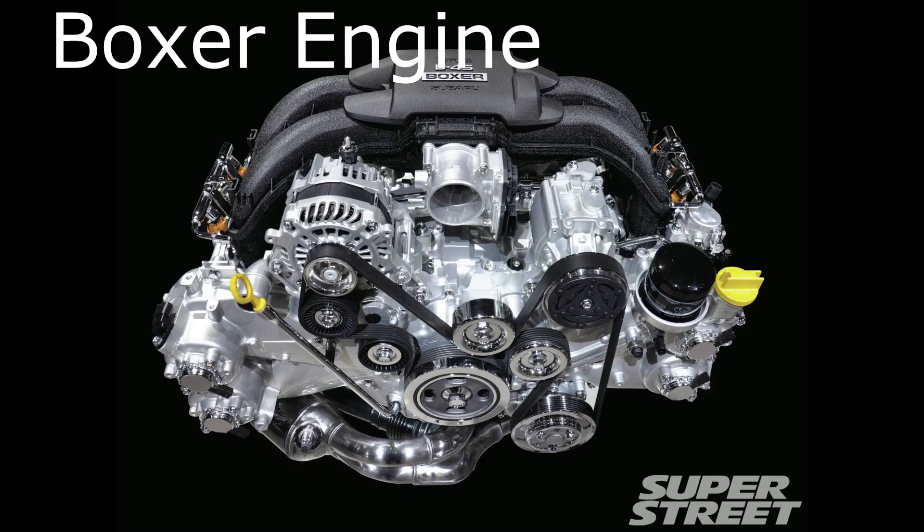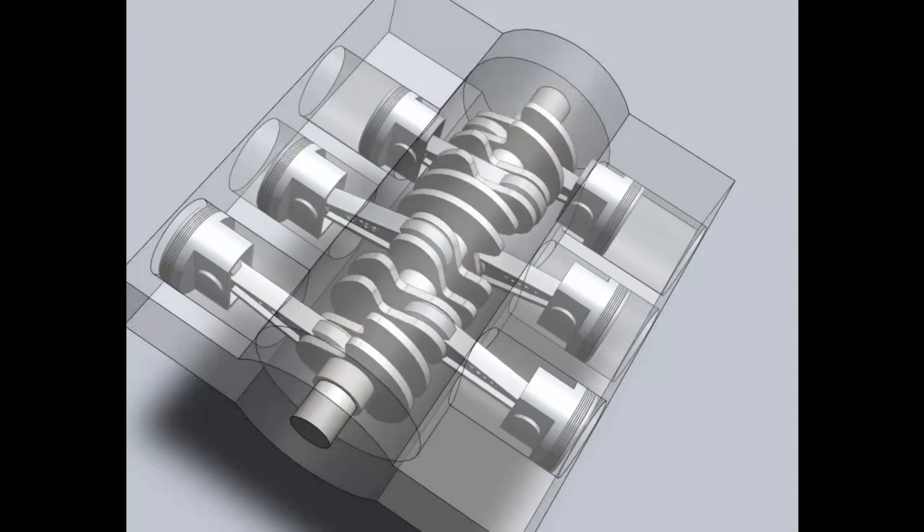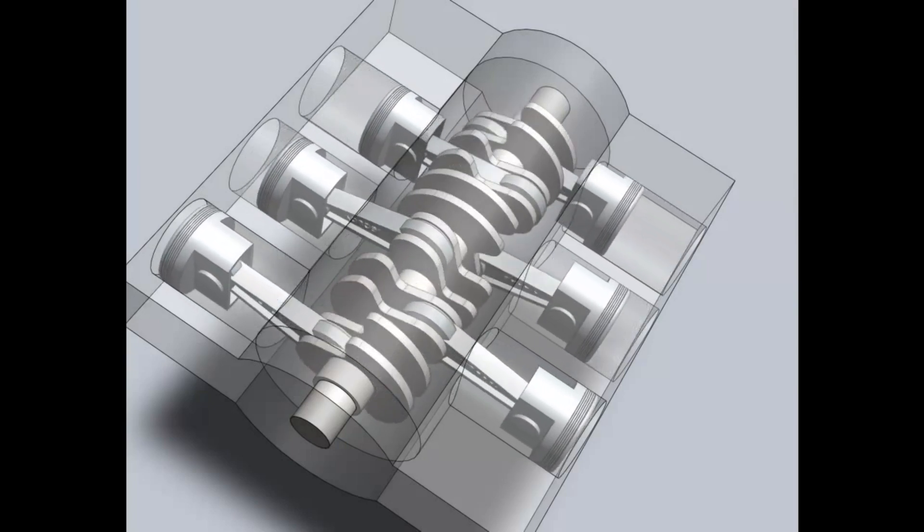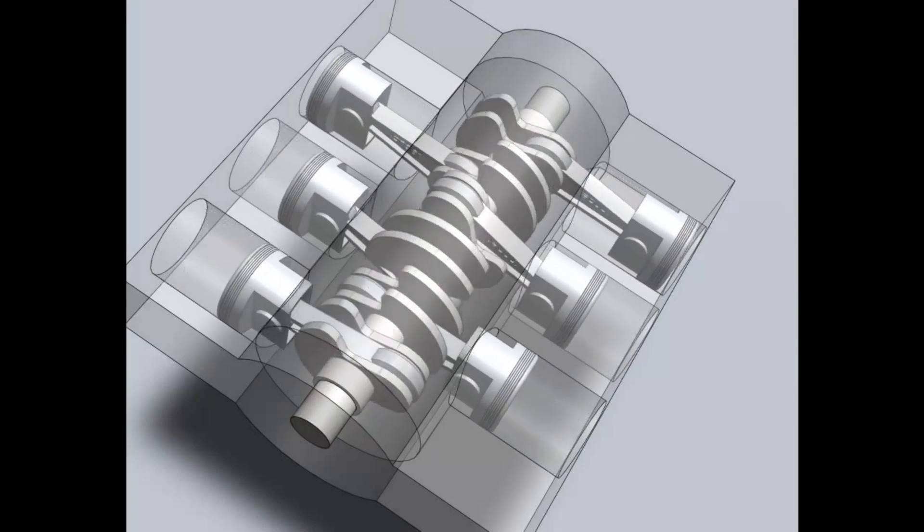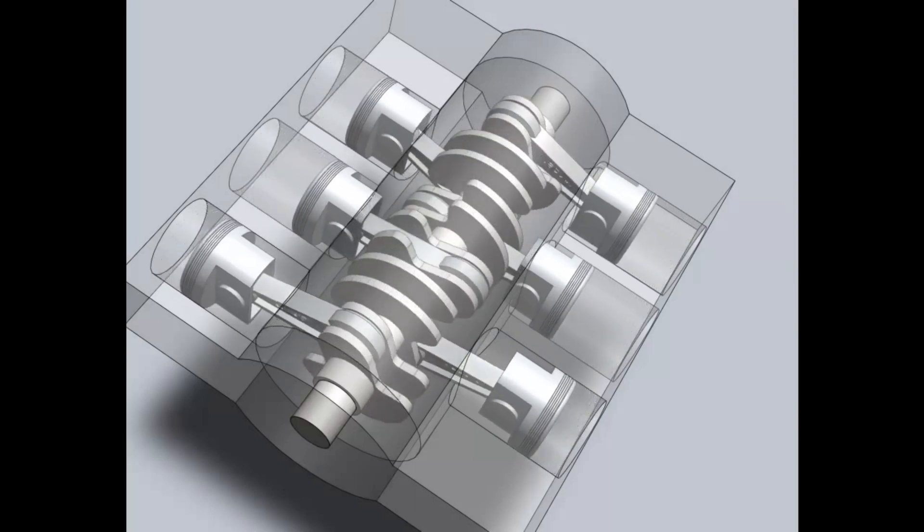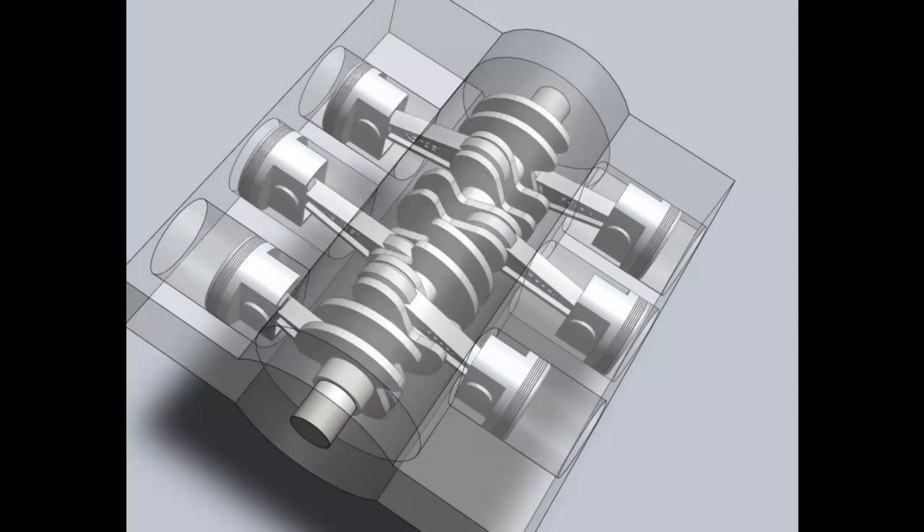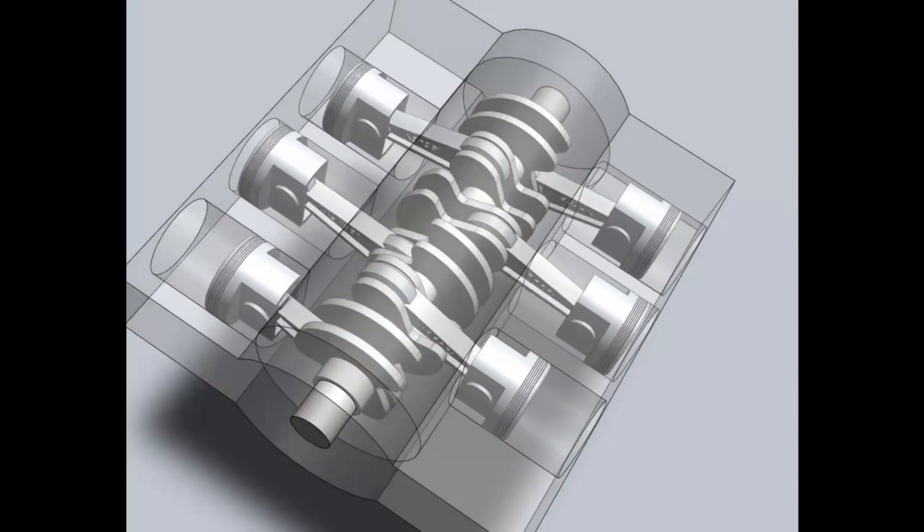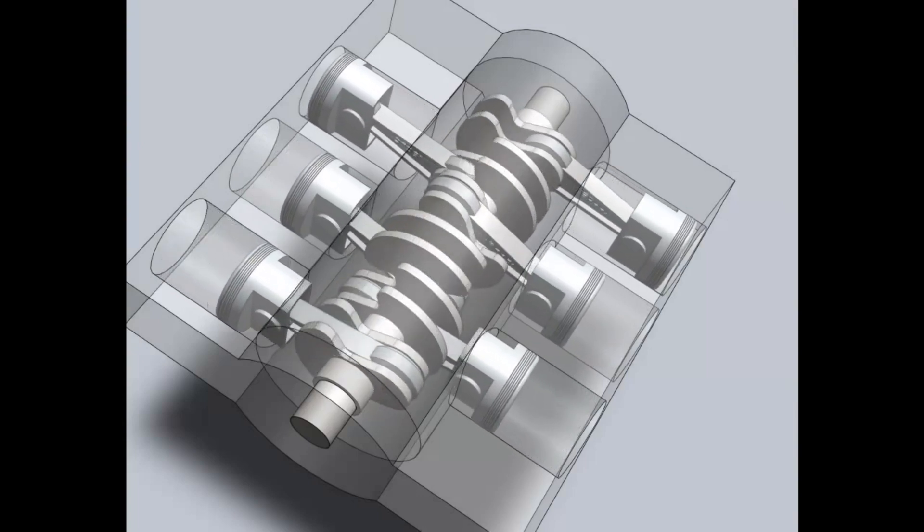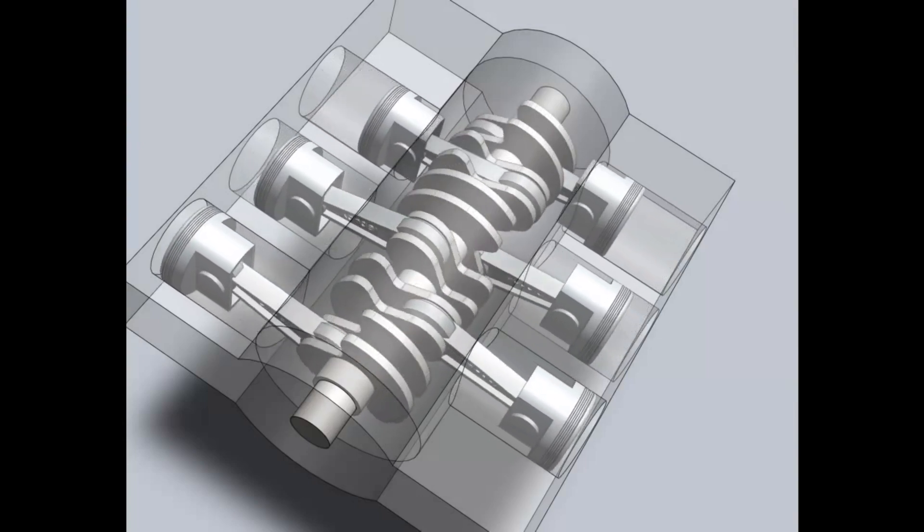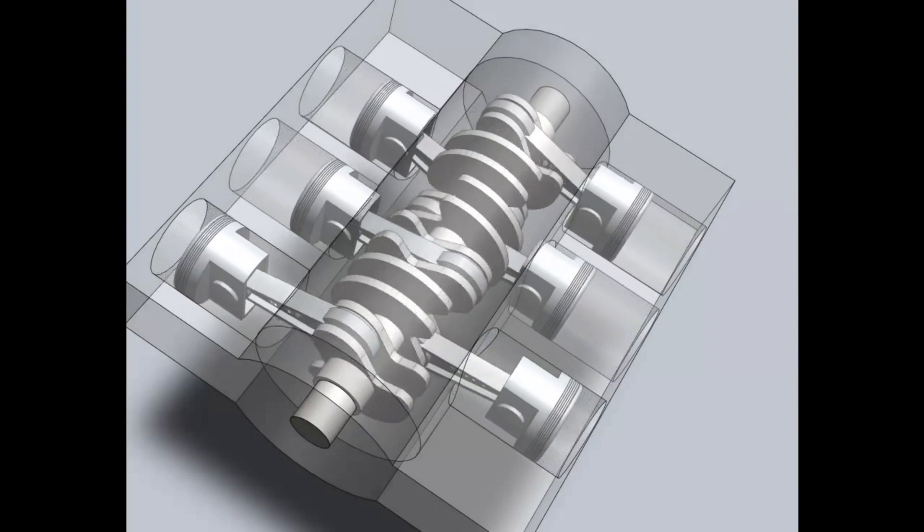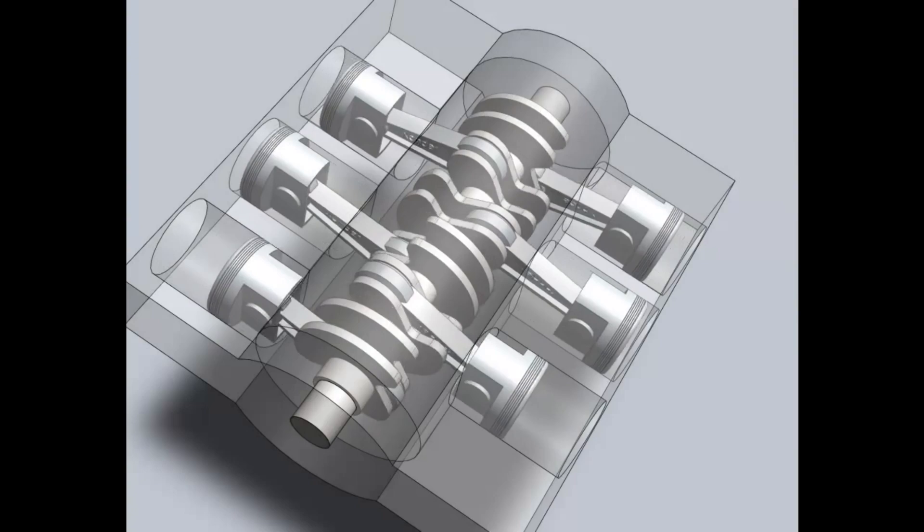Next in the list is the boxer engine. Boxer engines are also known as flat or horizontally opposed engines. The cylinders are laid down on their side in two banks and point away from each other. This type of engine helps keep the center of gravity low, usually to benefit handling. These engines are known for their distinctive sound, and there are only two car companies currently using boxer engines in their range: Porsche and Subaru.